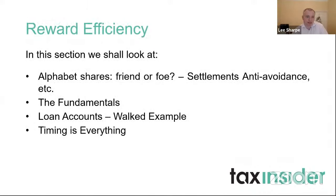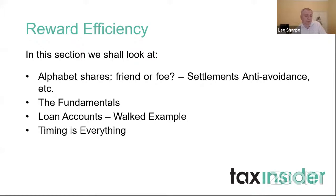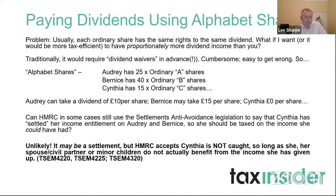The second stage is reward efficiency — how to efficiently reward people. In this section we'll look at alphabet shares, the settlements anti-avoidance legislation, fundamentals of salary versus dividends, tax-favoured benefits in kind, loan accounts, and the importance of timing when paying dividends and bonuses using alphabet shares.